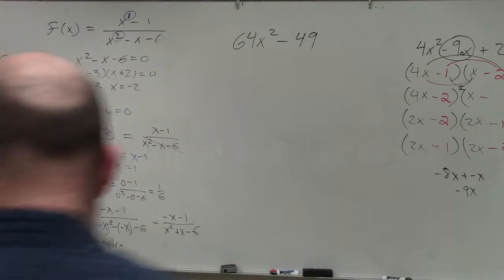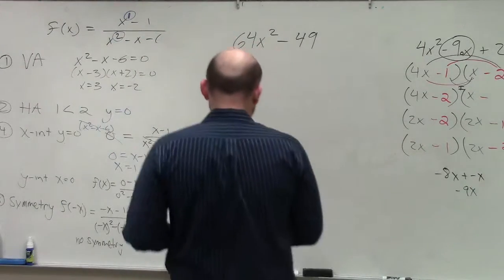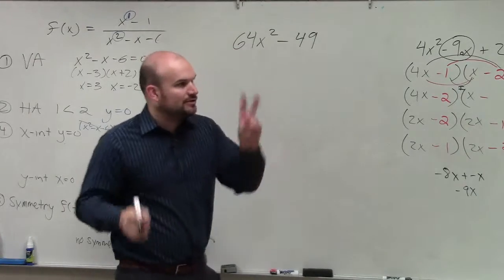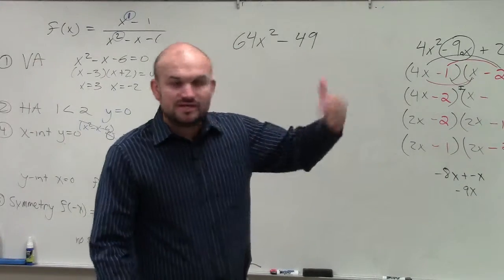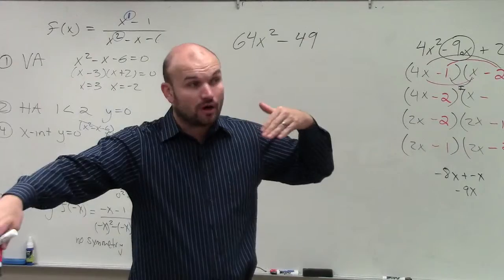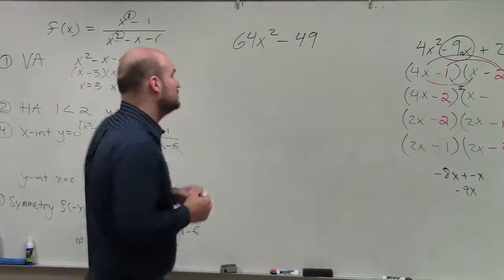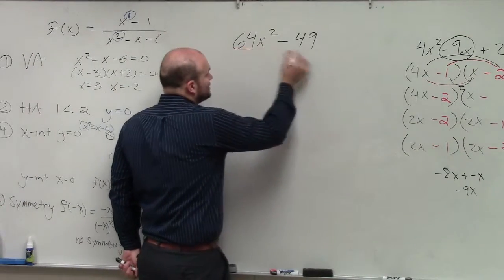Doing a times c, 64 times 49, that's not going to be fun. So any time you guys are looking and you only have two terms, look to factor out the GCF like you guys had on your homework, or also look to see if you have squared terms.